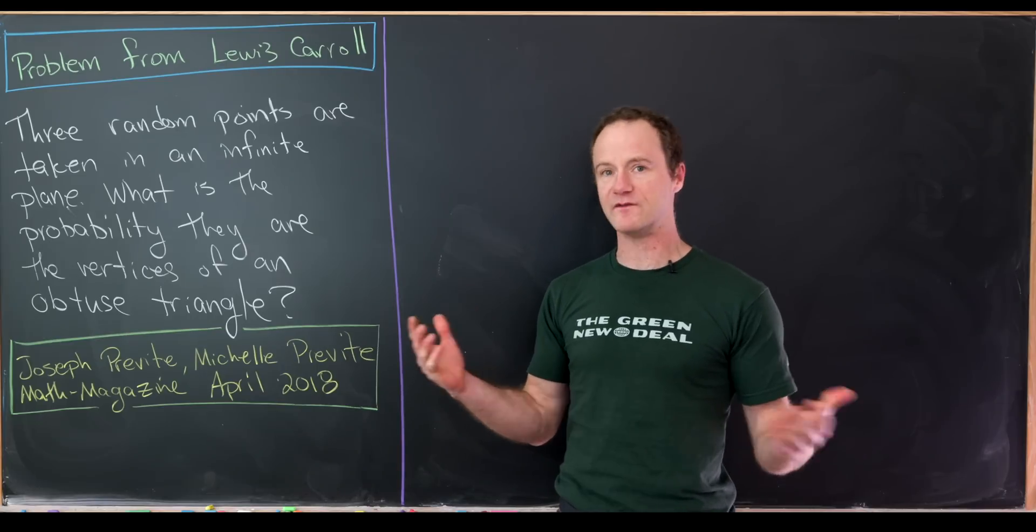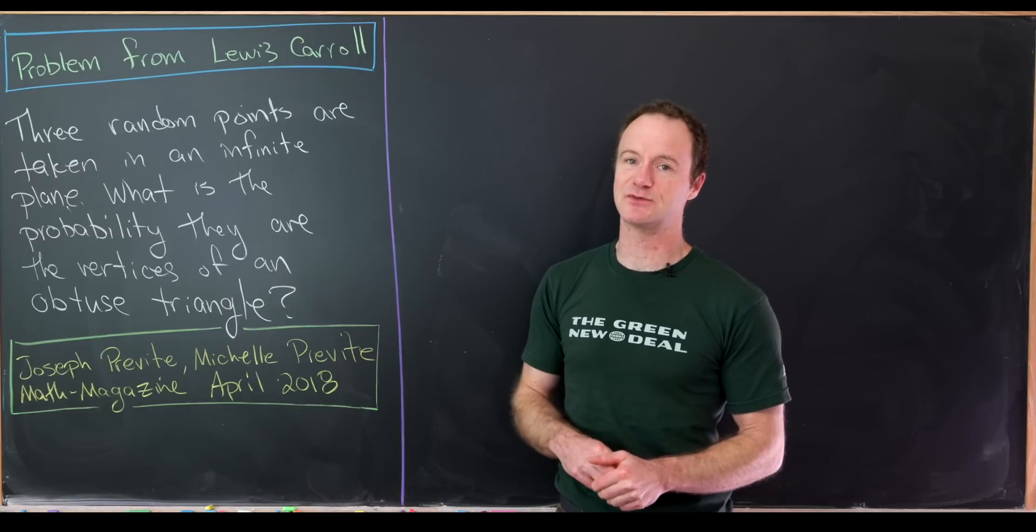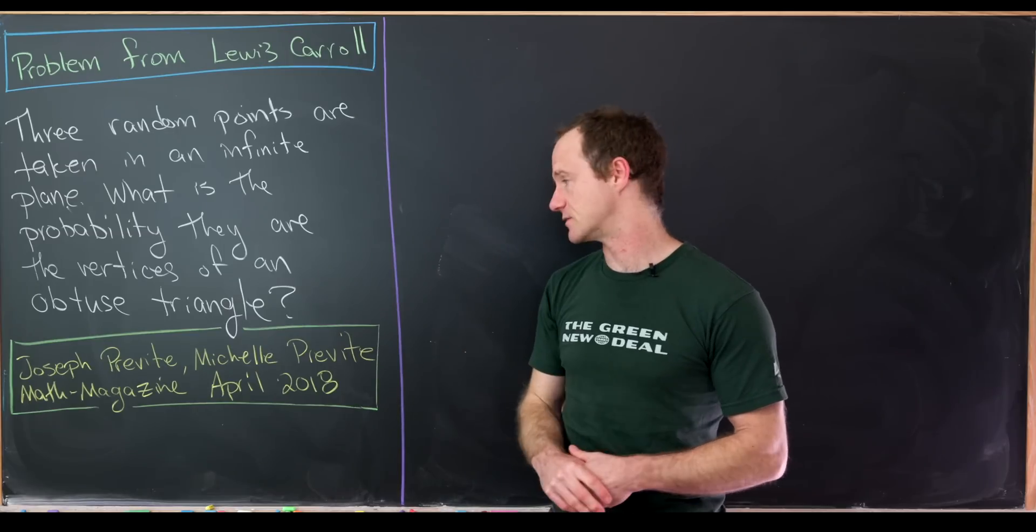And then our goal is to determine the probability that these three points are vertices of an obtuse angled triangle. In other words, one of the angles of the triangle is obtuse. Let's notice that since the angles of a triangle add up to 180 degrees, only one of those angles can be obtuse.